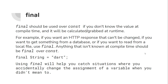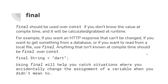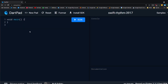Final should be used over const if you don't know the value at compile time, as it will be calculated at runtime. For example, if you want an HTTP response that can't be changed, or if you want to get something from a database, or read from a local file, you use final. Anything that isn't known at compile time should be final, not const.